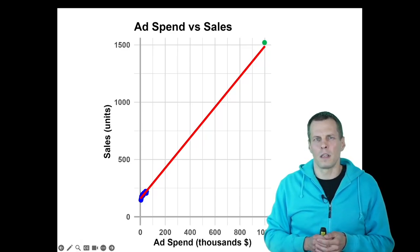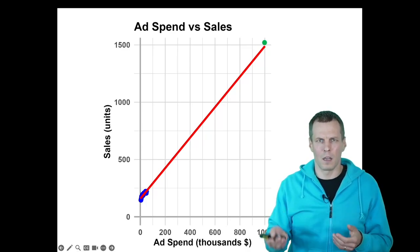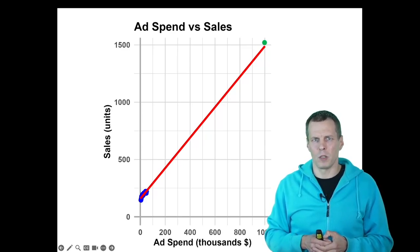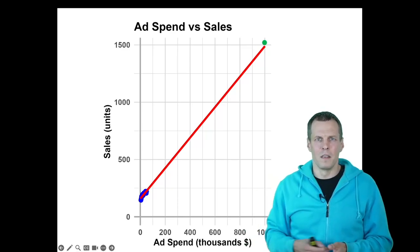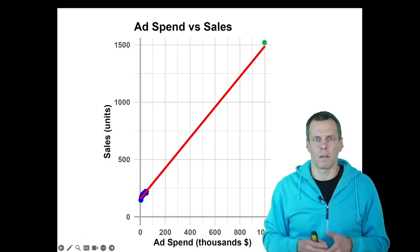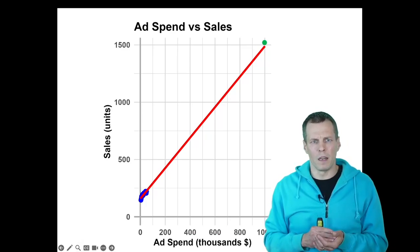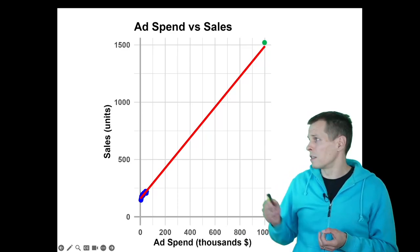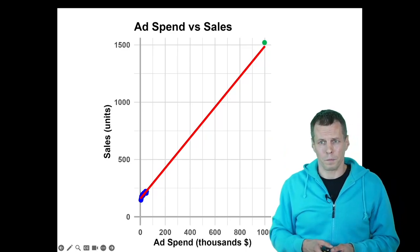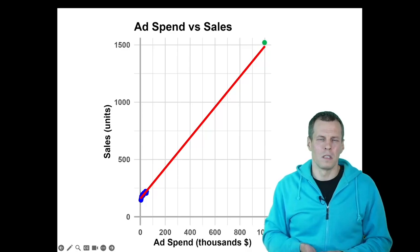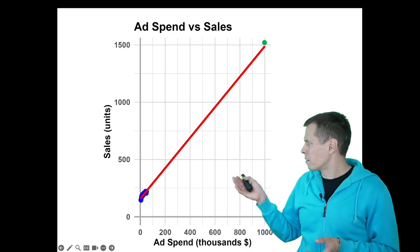First of all, it doesn't consider that advertisement has diminishing returns. So the first dollar is more valuable than the tenth dollar and so on. Also, there are probably other constraints that come into play. Just increasing your advertisement hundredfold will not increase your sales hundredfold. There are other constraints. So the real value might be somewhere closer to 200 or 500 units than 1500 units. Extrapolation generally is not good in statistical models.